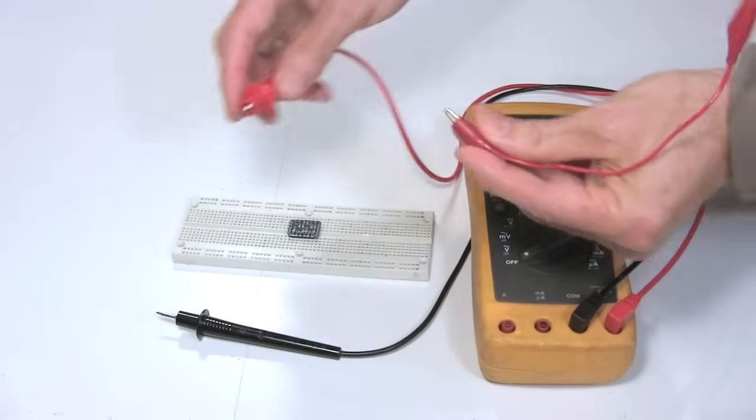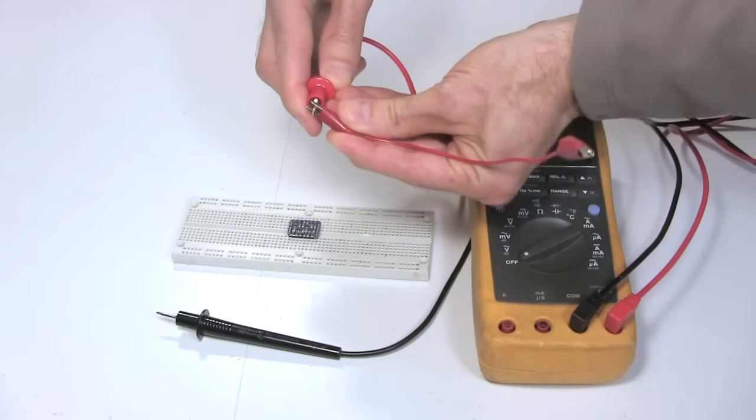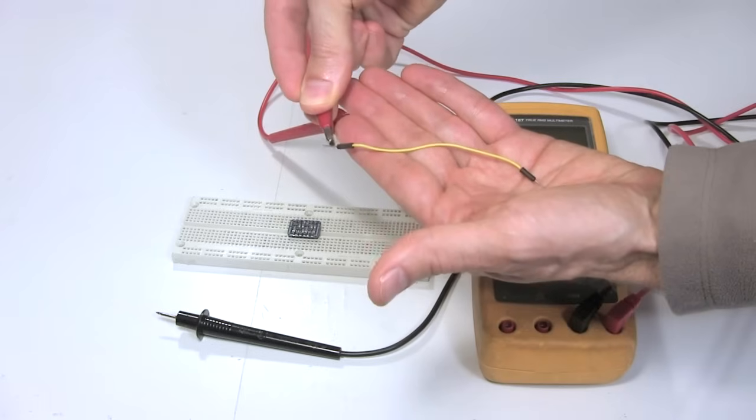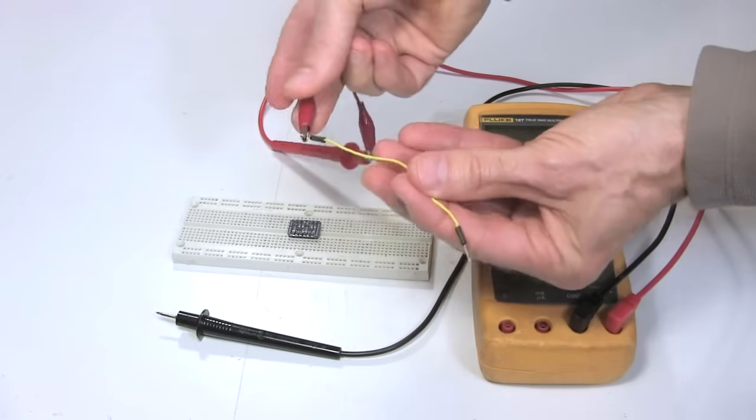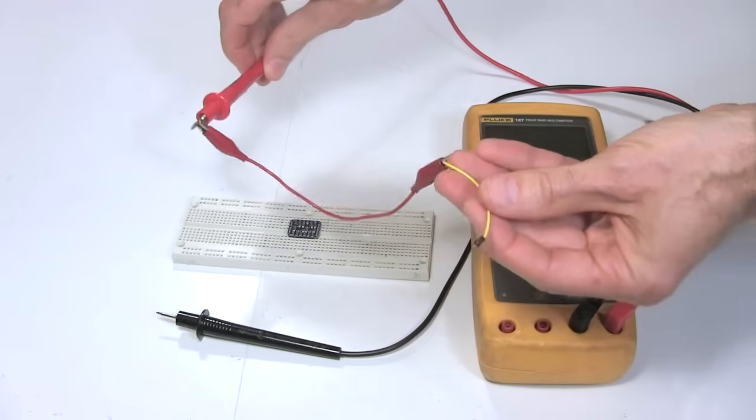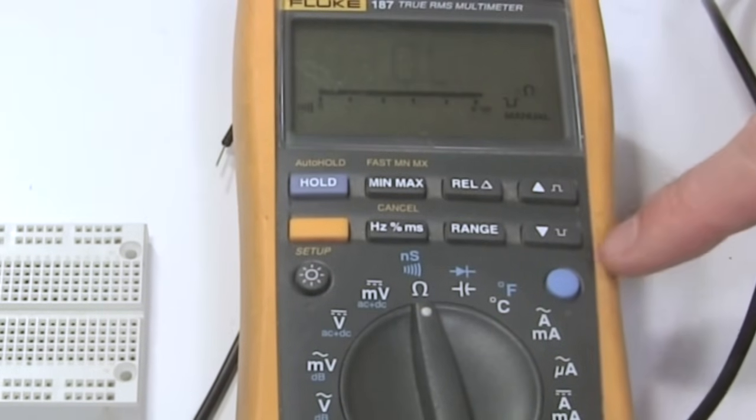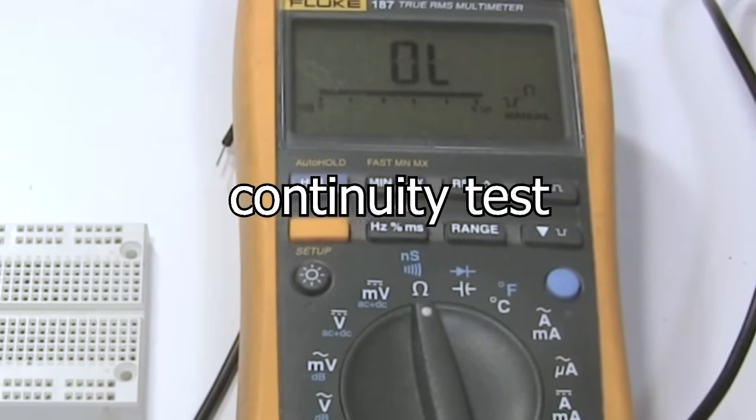But if you want to, you can test them anyway, using a meter. I first put a wire with alligator clips on either of the probes. That's so that I can connect to a wire that I can plug into the breadboard holes easily. Then I set the meter to measure resistance, and push the button that will make it beep when there's a good connection. This is called a continuity test.